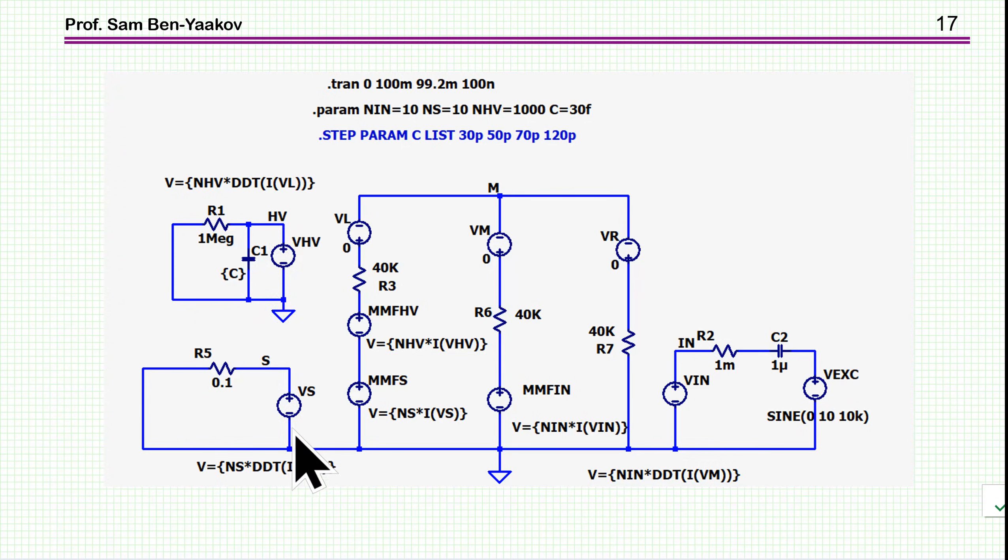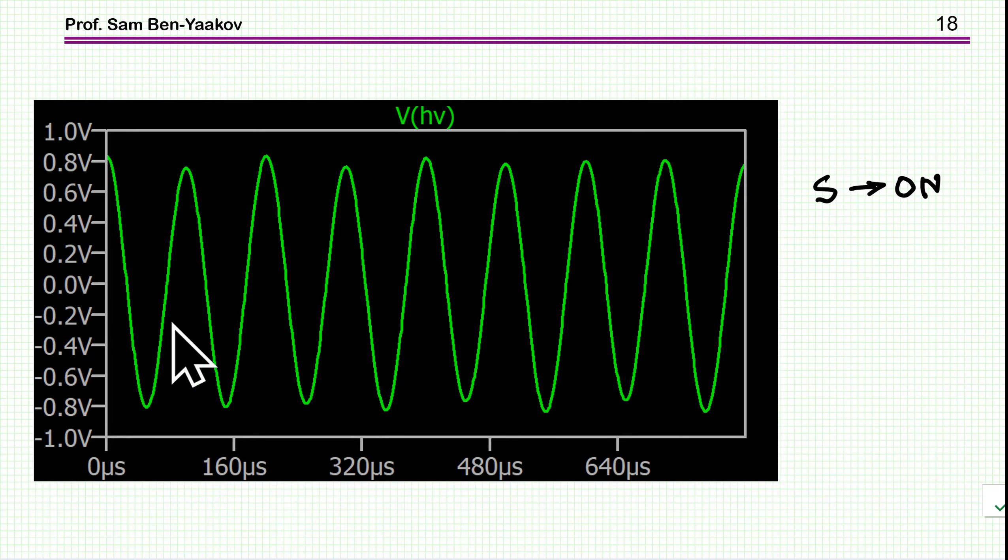So the first thing is to run it with a short here. In the short, we expect a low voltage here and a low voltage here. And indeed, we see at the high voltage, we see 0.8 volts, rather low voltage. And the auxiliary circuit, of course, will be lower by 100 fold. So this is when the switch is on.